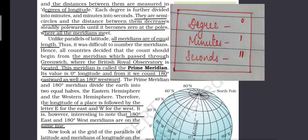Unlike parallels of latitude, all the meridians are of equal length. Since it was difficult to number the meridians, all countries decided that counting should begin from the meridian passing through Greenwich, where the British Royal Observatory is located. This meridian is called the prime meridian. Its value is 0 degree longitude and from it we count 180 degrees eastward as well as 180 degrees westward. The prime meridian and the 180 degree meridian divide the earth into two equal halves: the eastern and western hemispheres. The longitude of a place is followed by the letter E for east and W for west.